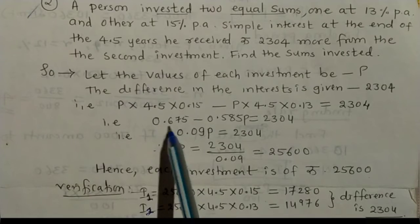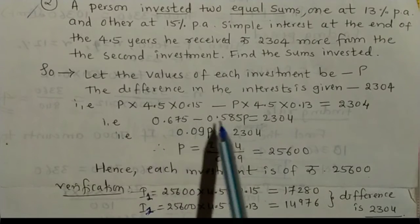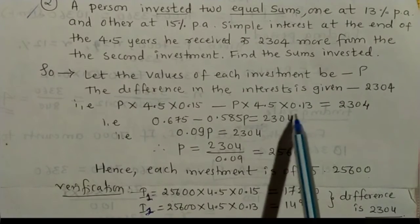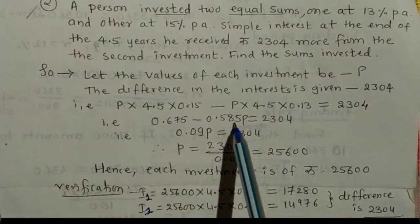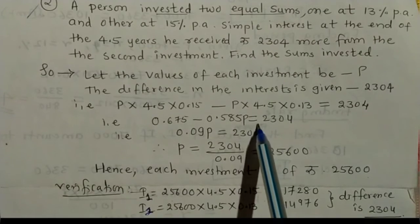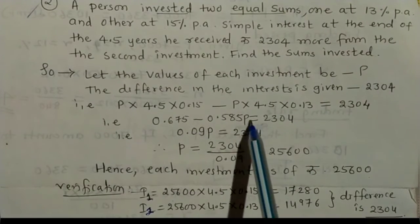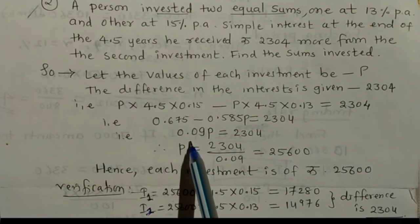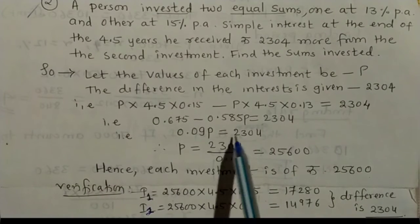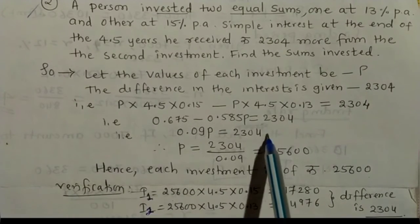So after calculating this, it returns 0.75 in first case and in second case it returns 0.585, equal to 2304. After subtracting this, it returns 0.09P equal to 2304.